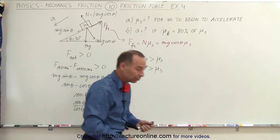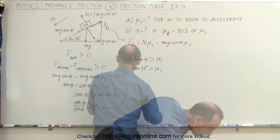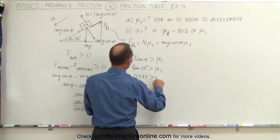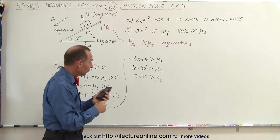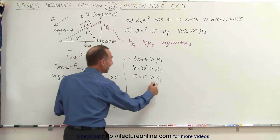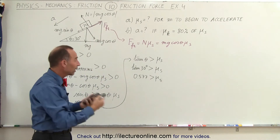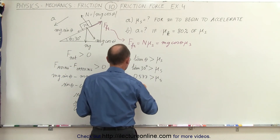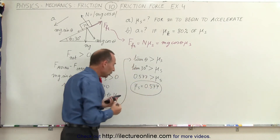So what is mu sub s equal to? Taking the tangent of 30 degrees gives us 0.577, which must be greater than mu sub s. This means that the moment we lower mu sub s below 0.577, the object will begin to slide. Before that, if mu sub s is greater than 0.577, the object will remain in place. So the borderline case is that mu sub s equals 0.577 — that's where the object will begin to slide.